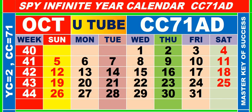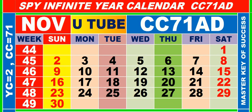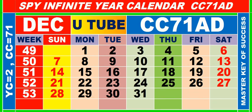Calendar for the month of October, having calendar code equal to 71. Calendar for the month of November, having calendar code equal to 71. Calendar for the month of December, having calendar code equal to 71.